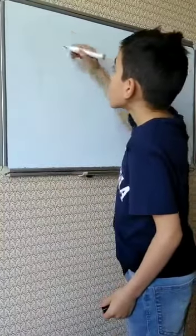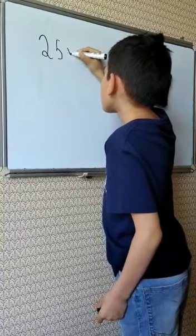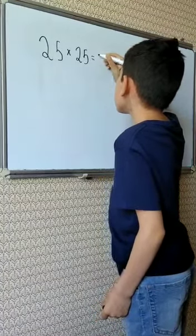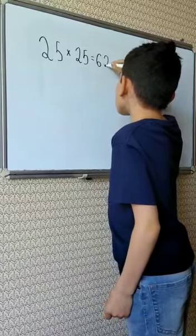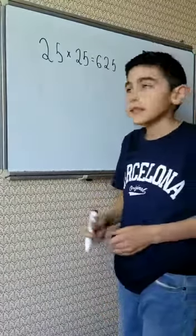For example, 25 multiplied by 25 is 625. How did I get it?